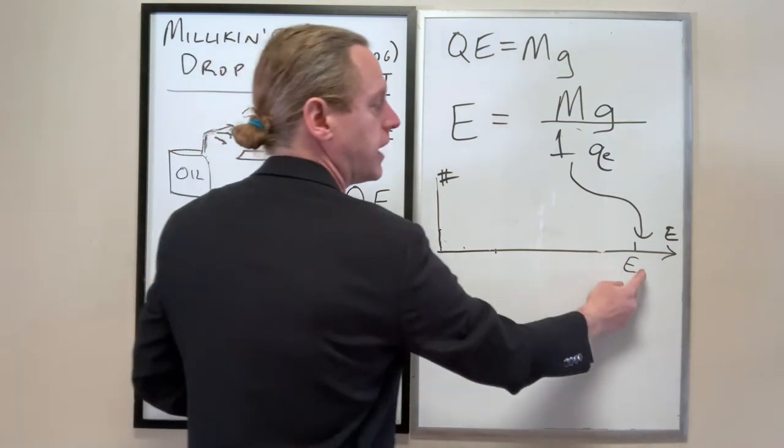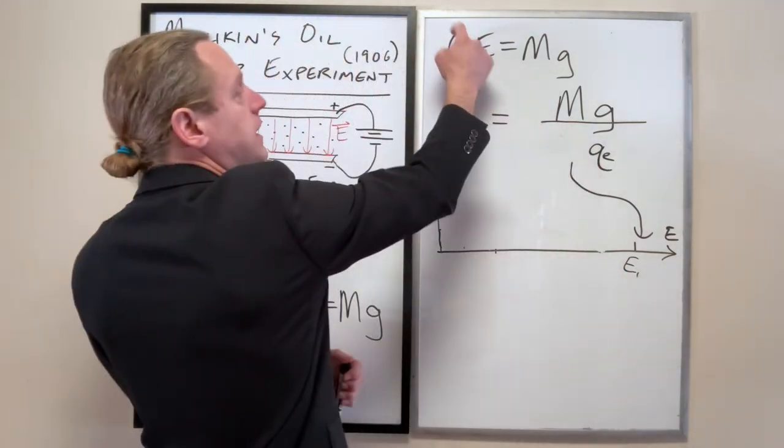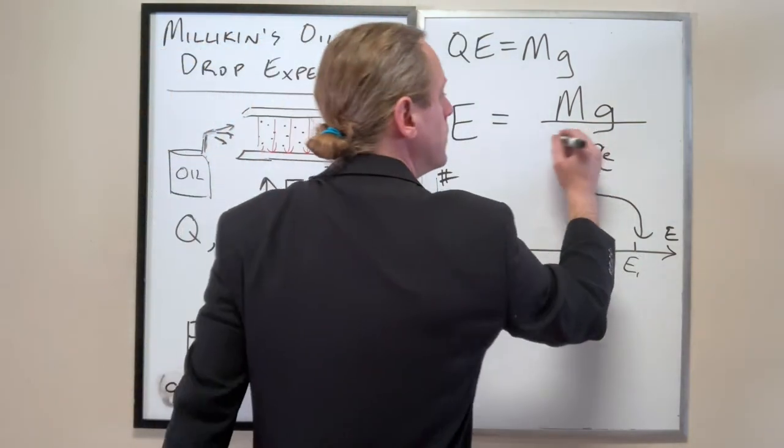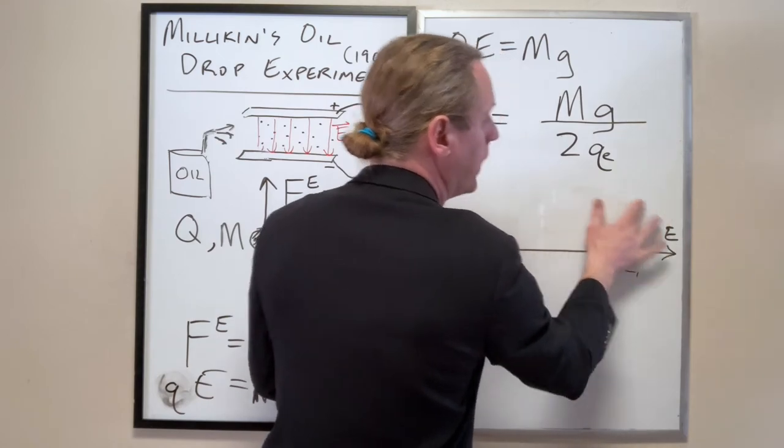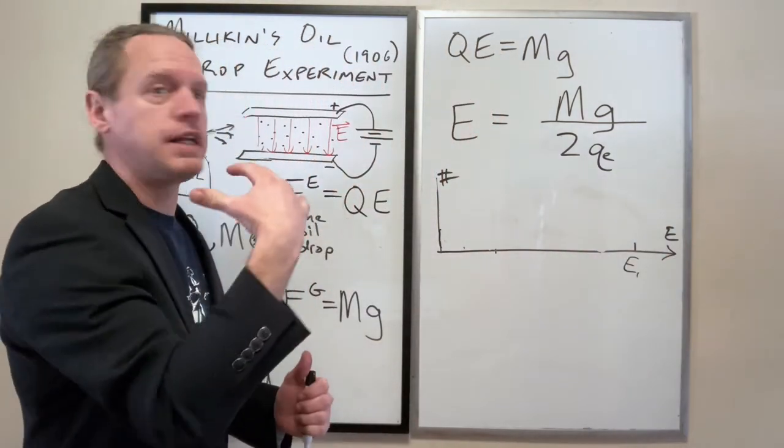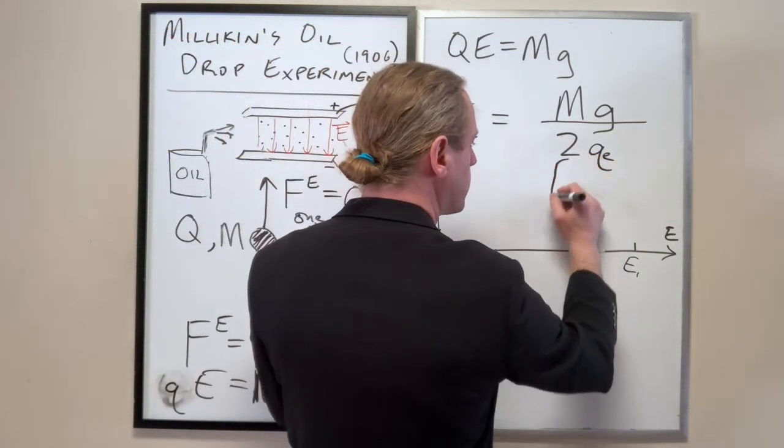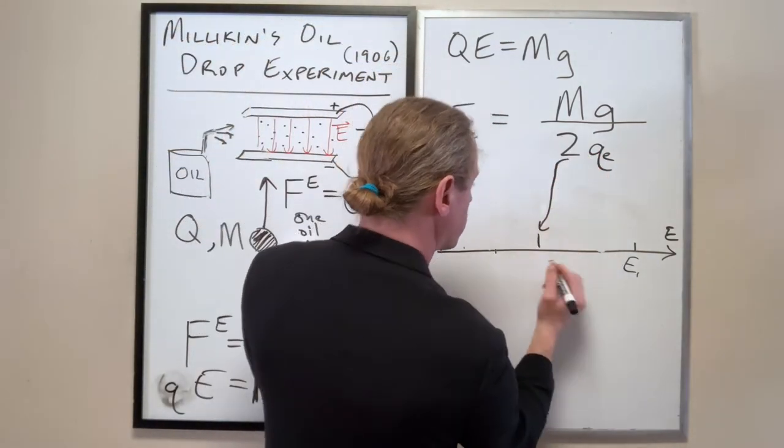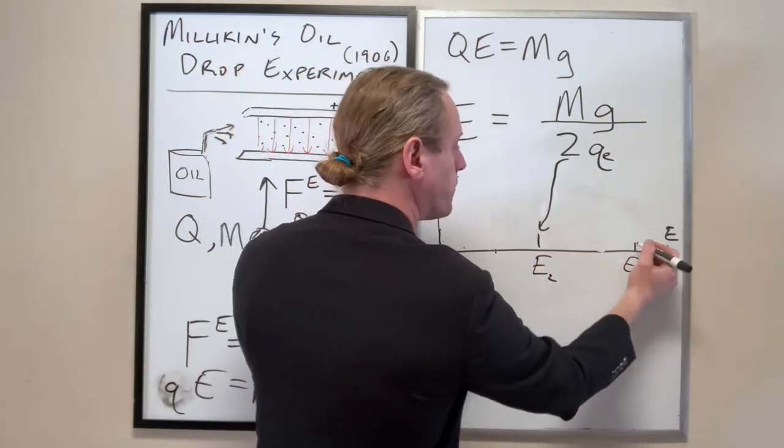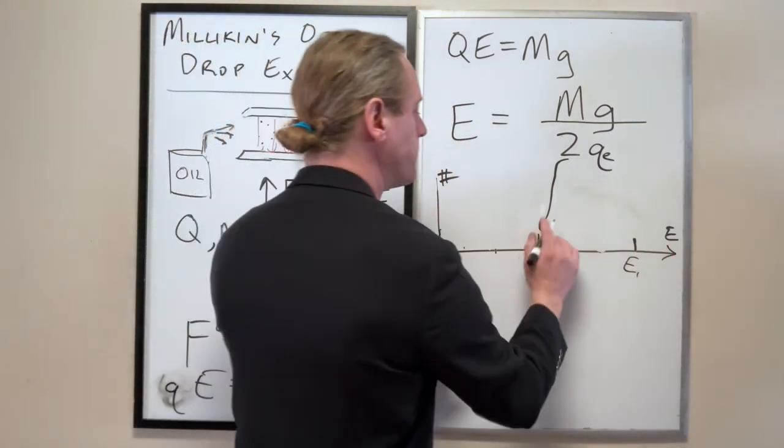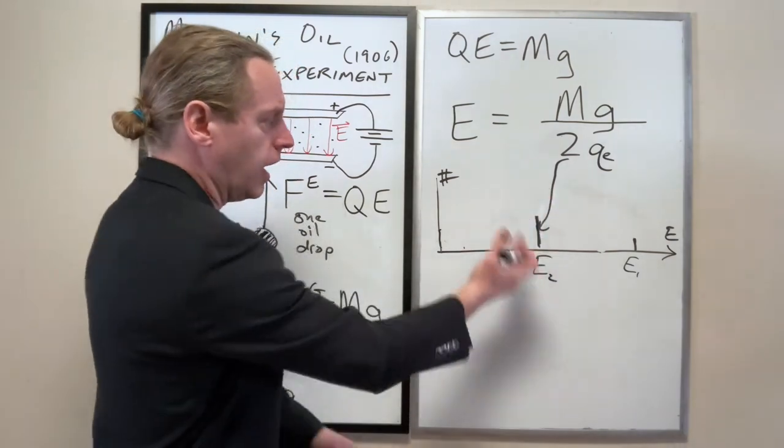This is the electric field that balances droplets that only have a single electron. Now, let's say that Q was two electrons. In this case, if you have twice the charge, you only need half the electric field to give the same force. So this gave us that electric field that was exactly half of what we had before, E2. And it's possible there might have only been a few droplets that have one electron. There might be more droplets that have two electrons there. So we might have a higher histogram at that point.